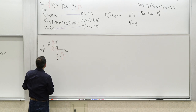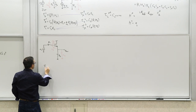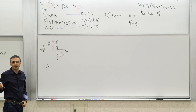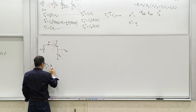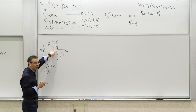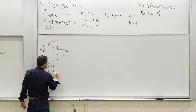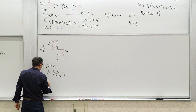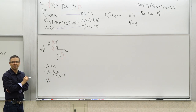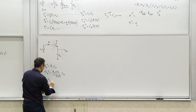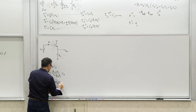Let's do the time constants for the source follower. Tau_mu_zero: resistance seen by C_mu when other capacitors are open — just R1. So it's R1 C_mu. Tau_pi_zero: the resistance seen by C_pi, using the expressions we derived: R1 + R2 / (1 + G_m R2), times C_pi. Tau_L_zero: resistance seen by C_L — R2 parallel R_M, so it's (R2 parallel R_M) C_L. Those are your ZVTs.